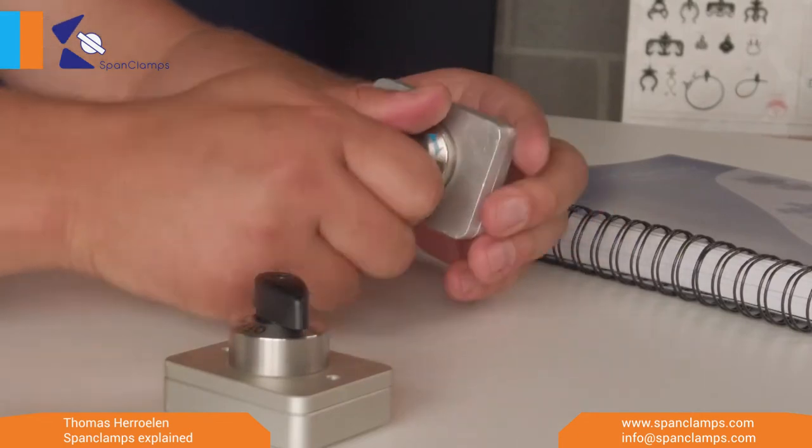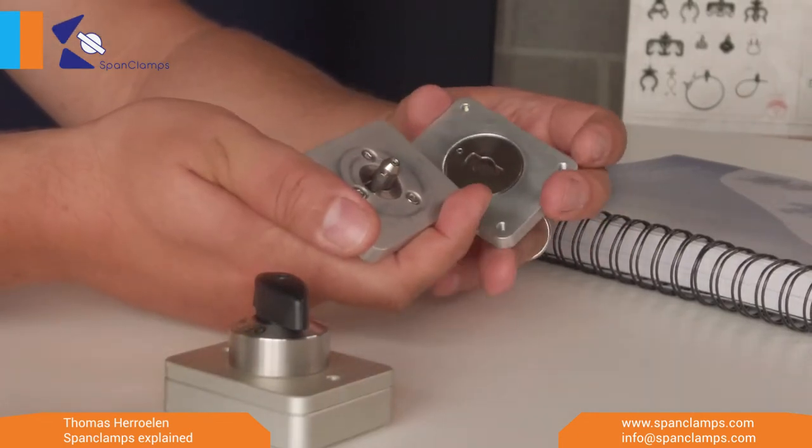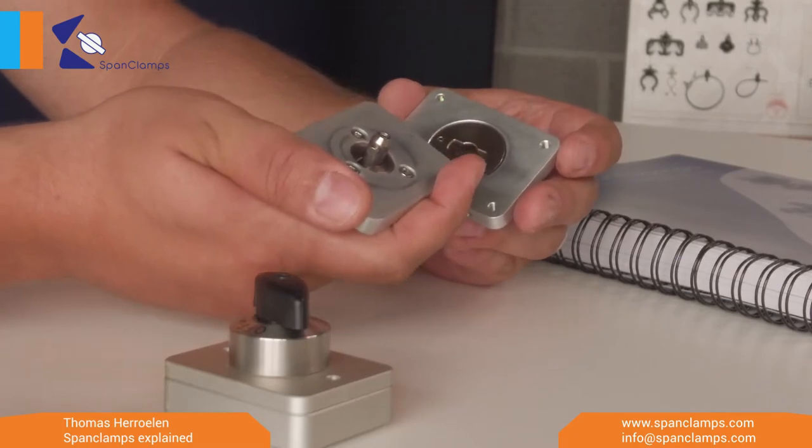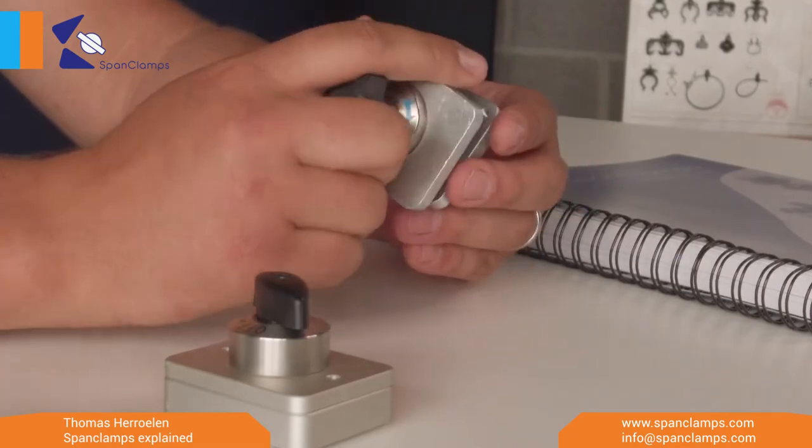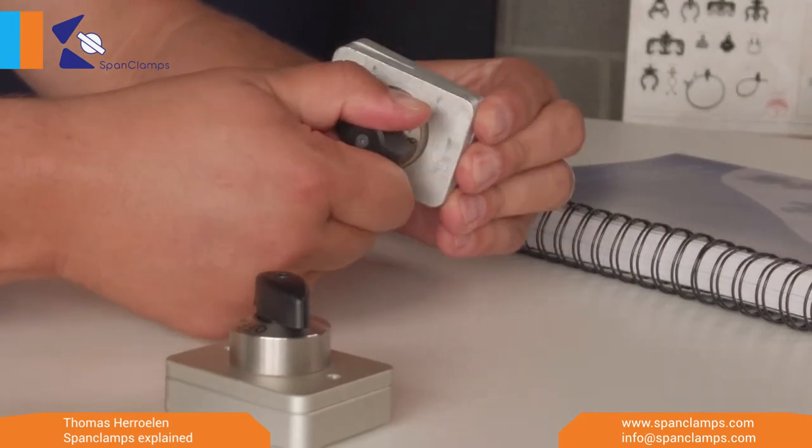The first one is with a cross pin, which is mostly used when you require large tensile strength. Tensile strength meaning the pull-out strength is very, very high.